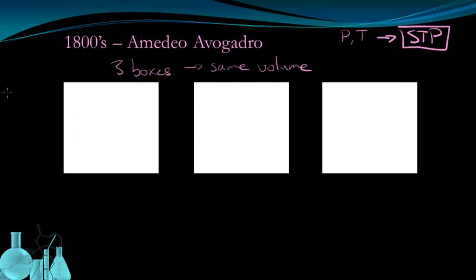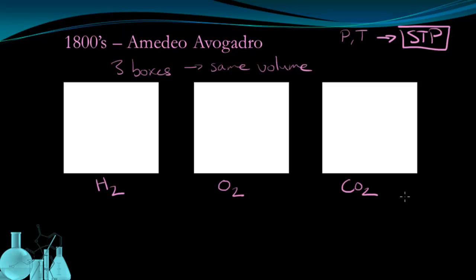Remember, Avogadro was exploring the relationship between the masses of different gases. So let's put some different gases into each one of these boxes. In the first box, we'll put hydrogen gas. In the second box, we'll put oxygen gas. And in the third box, let's put carbon dioxide. So now we have three boxes with different gases in them.